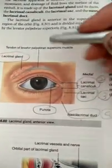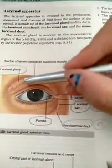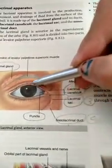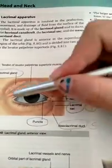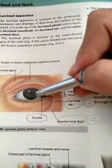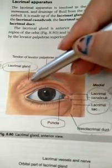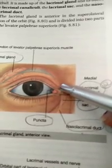We are now studying the lacrimal apparatus. The lacrimal apparatus is basically responsible for the production, passage, and drainage of fluid from the surface of the eyeball. This is done by a system consisting of the lacrimal gland with its small ducts, the lacrimal canaliculi, the lacrimal sac seen as an expanded form, and below that the nasolacrimal duct.